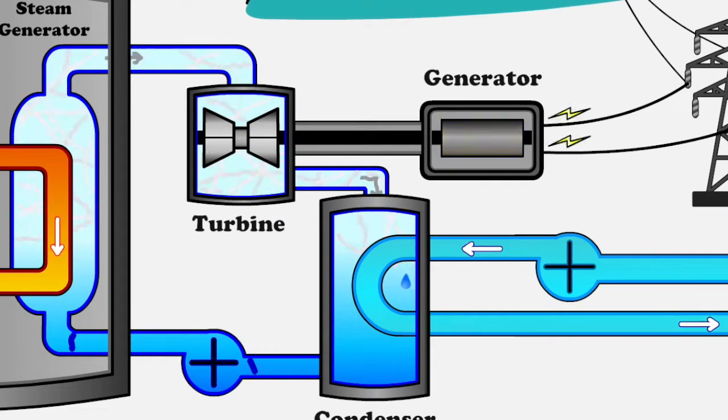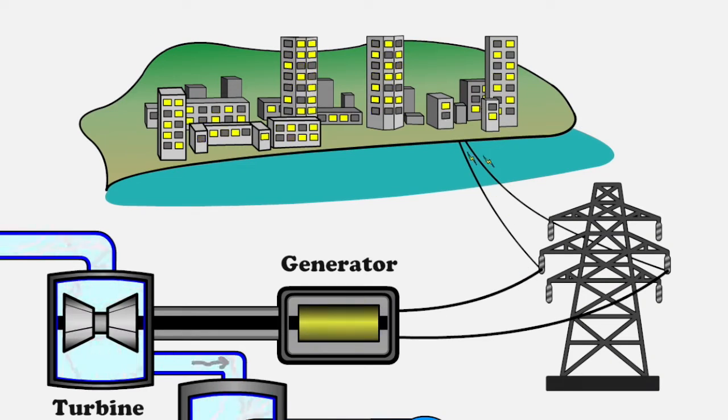Cooling water circulates through a condenser precipitating spent steam for reuse. Generated electricity is distributed to customers.